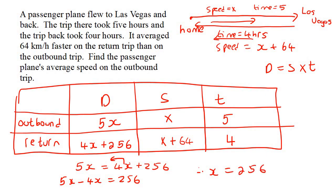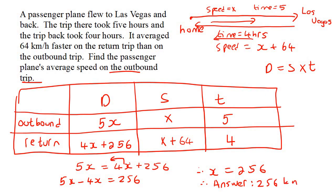Now make sure you've answered their question. It says find the passenger plane's speed on the outbound trip. That is x, so this is our answer. Therefore, using the correct units, the answer is 256 kilometers per hour.